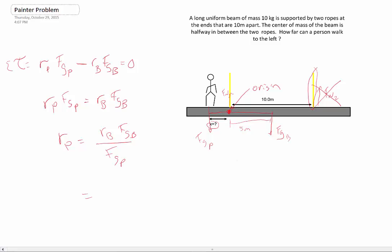I'm going to go ahead and put in my five meters for RB, my 10 kilograms for the beam times 9.8 meters per second squared. And then I'm just going to go ahead and put in my mass of 70 kilograms, and that's also times 9.8 meters per second squared. You notice these actually get crossed out. And we just get that it's just how far the person can walk is just five by 70. And so this is 0.71 meters.